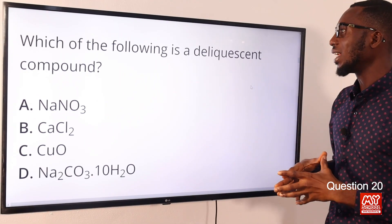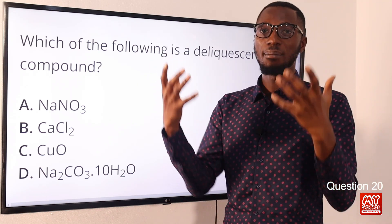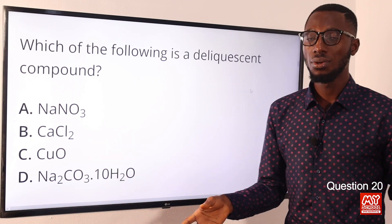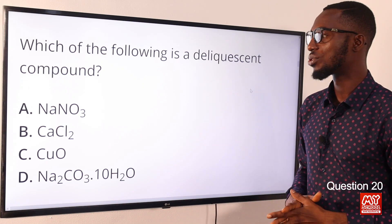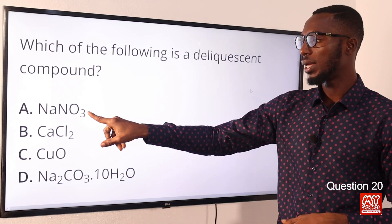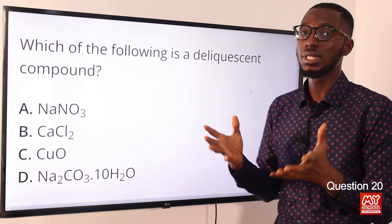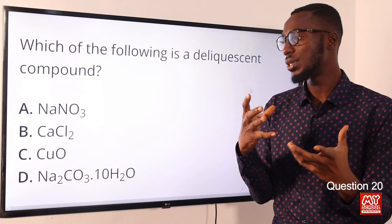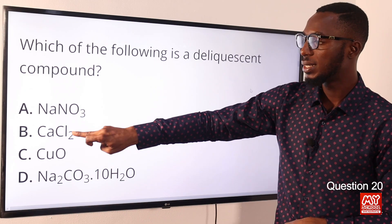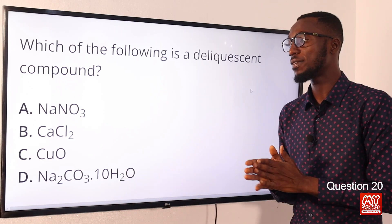Question 20: Which of the following is a deliquescent compound? A deliquescent compound, when exposed to the atmosphere, absorbs a large amount of water and turns into a solution. Examples include calcium chloride, magnesium chloride, iron(III) chloride, and caustic soda (NaOH). Hygroscopic compounds absorb water but just become sticky — they don't dissolve. Washing soda (sodium carbonate) is efflorescent. The correct option is option B for calcium chloride.